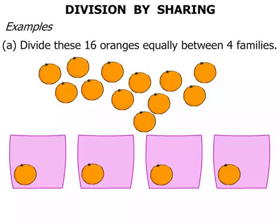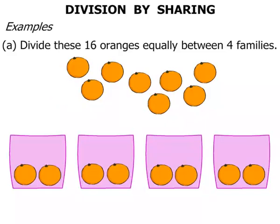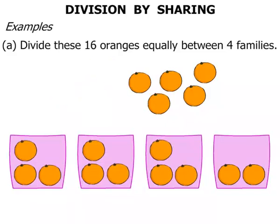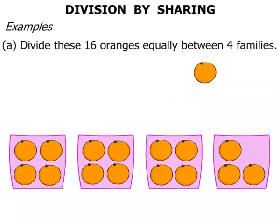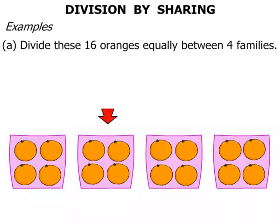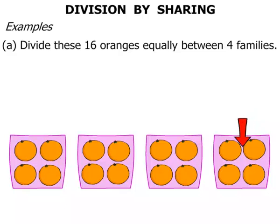Those 4 oranges are distributed between the 4 families. We continue that — 1, 2, 3, 4 — and keep on doing that until all of the oranges have been split up. Now we can see in the first basket there are 4 oranges; the next, also 4 oranges; then 4 oranges there and 4 oranges there.